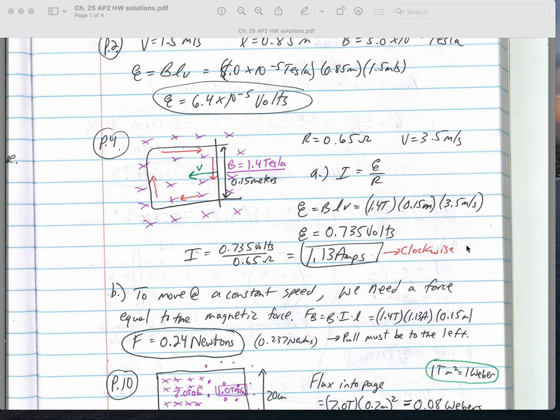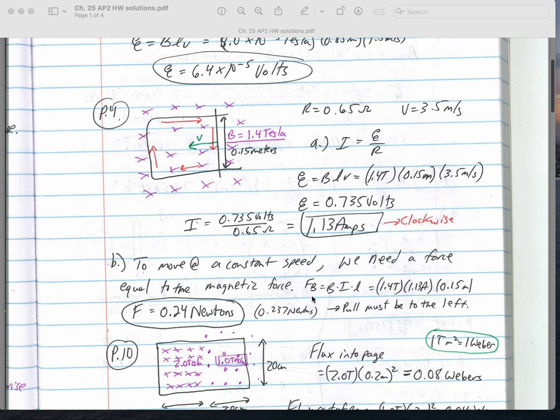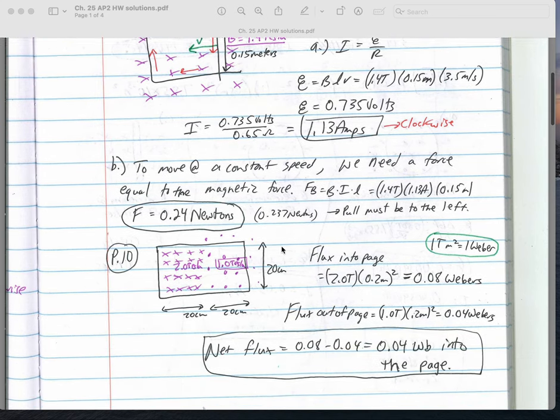I don't think it asks for whether it would be clockwise or counterclockwise. To keep it moving at a constant speed, I'm going to go back to this formula from chapter 24 and realize that my pulling force has to equal the magnetic force that would be caused by 1.13 amps going through that length of wire, and that is 0.24 Newtons. The pole must be to the left because the magnetic force would be to the right.